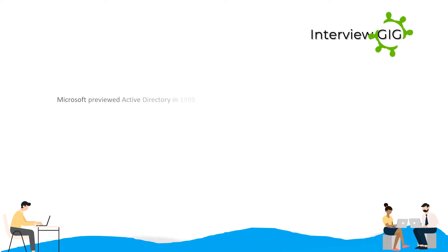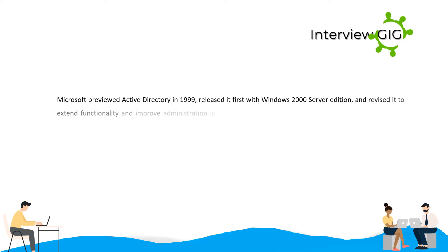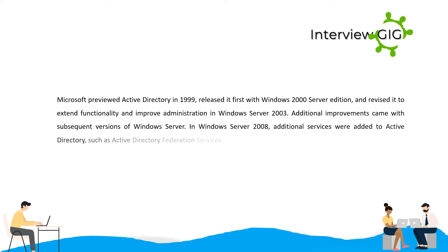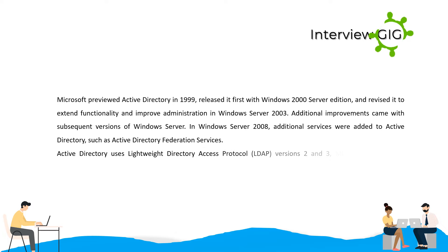Microsoft previewed Active Directory in 1999, released it first with Windows 2000 Server Edition, and revised it to extend functionality and improve administration in Windows Server 2003. Additional improvements came with subsequent versions of Windows Server. In Windows Server 2008, additional services were added to Active Directory, such as Active Directory Federation Services.